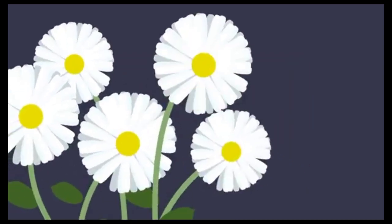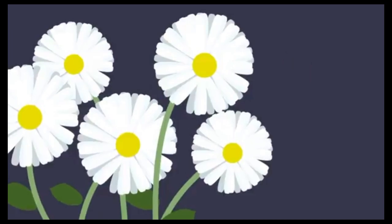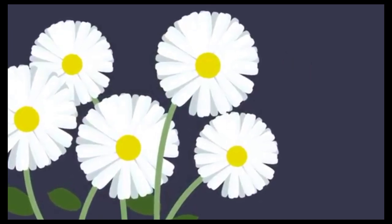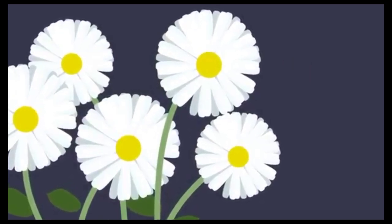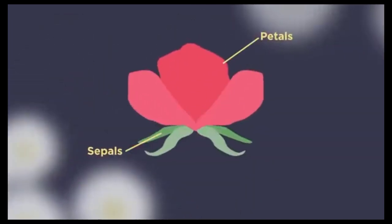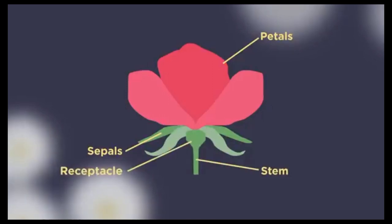Sexual reproduction is carried out in the flowers, which contain the sexual organs. Let's start with labeling the different parts of the flower. The petals and the sepals help protect the flower bud and can be brightly colored or scented to attract pollinators. The stem and the receptacle are other parts that connect the flower to the rest of the plant.